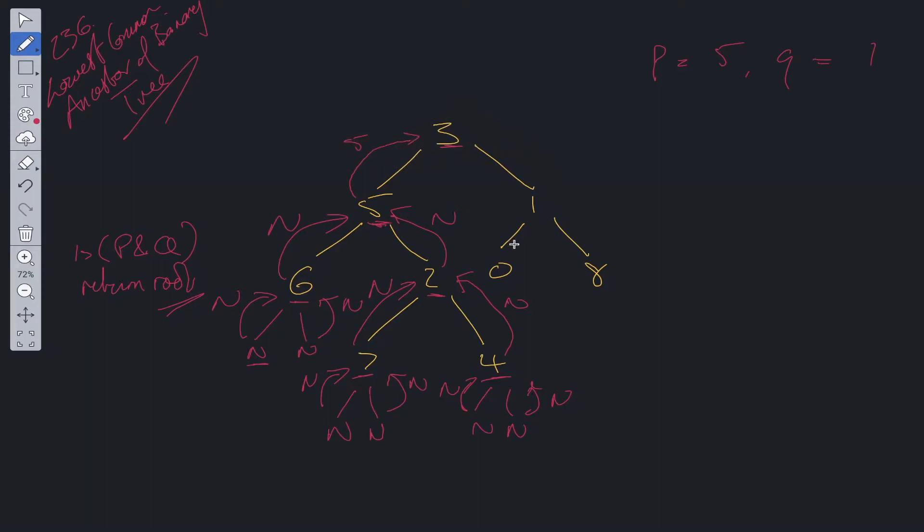Then at 3, at the root, we traverse down the right side. So we get to 0. We check—that's pointing to null. 8 is pointing to null because it's a leaf node, so these are returning null. 8 is not equal to P or Q, so we return null to 1.